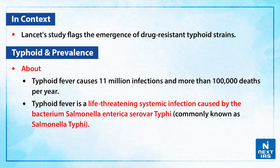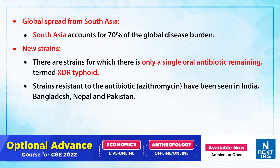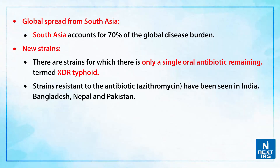Typhoid fever causes 11 million infections and more than 1 lakh deaths per year. It is a life-threatening systemic infection caused by the bacterium scientifically named Salmonella enterica serovar typhi, commonly known as Salmonella typhi. South Asia has accounted for 70% of the global disease burden. There have been cases of new strains for which only a single oral antibiotic remains — these are termed XDR typhoid.